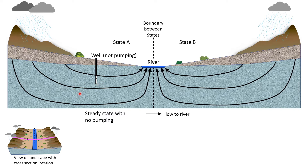Here are groundwater flow paths shown by black lines with arrows for conditions of recharge to the aquifer from rainfall at land surface and no pumping from the well. The system is in a steady state, meaning that groundwater flow does not change with time. The flow directions are generally from the left and from the right toward the river. Each state's groundwater discharges to its side of the river and there is no flow across the boundary.